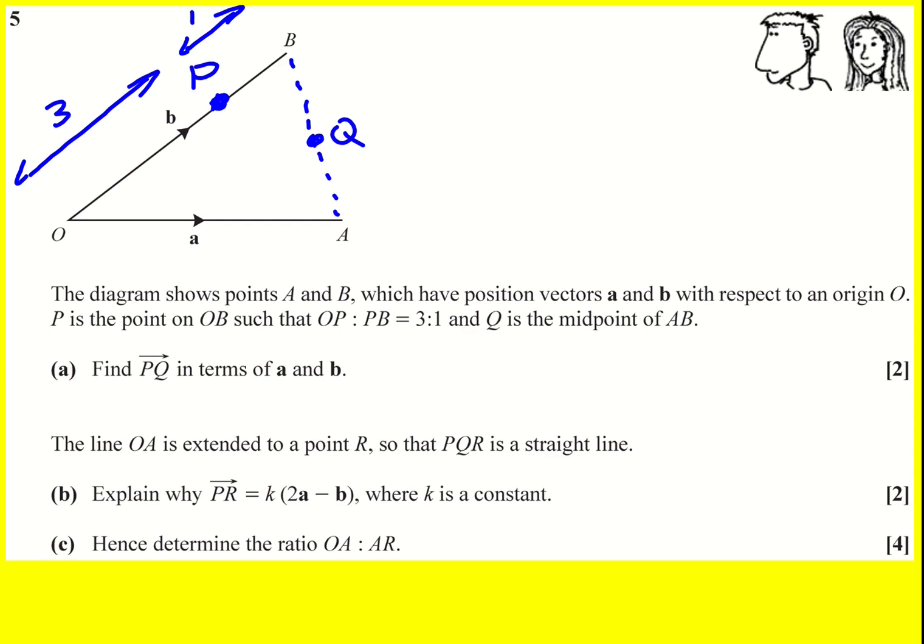Find PQ in terms of a and b. Alright, that's this one here PQ going this way. Now, first of all, we could write down what OQ is. That's going to be useful, how to go directly from O to Q, because then I can go from P to O and then O to Q.